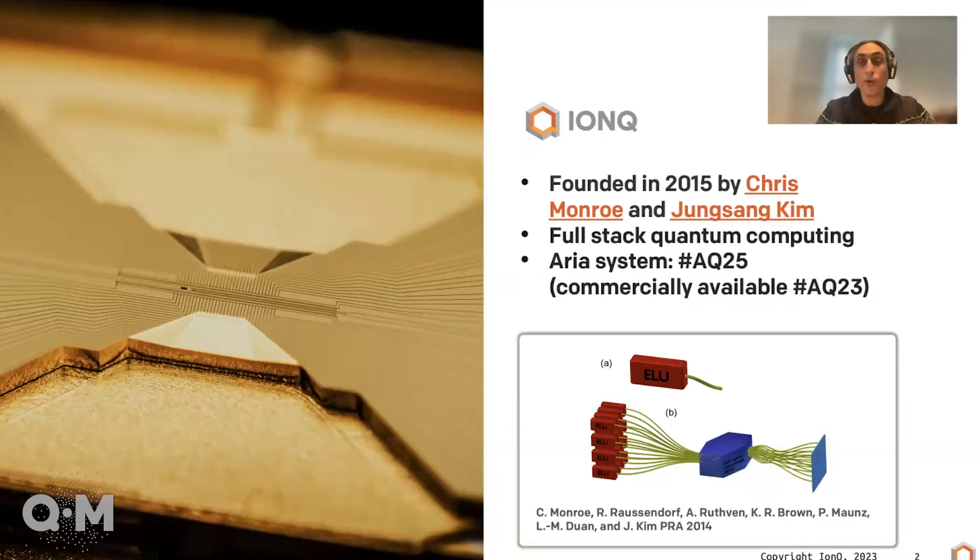Just as an example of how well we can control them, the most powerful quantum computer that exists today is our AQ25 system, which basically means we have not only 25 qubits in our system, but those 25 qubits operate at the high level that's required for a 25 qubit quantum computation.